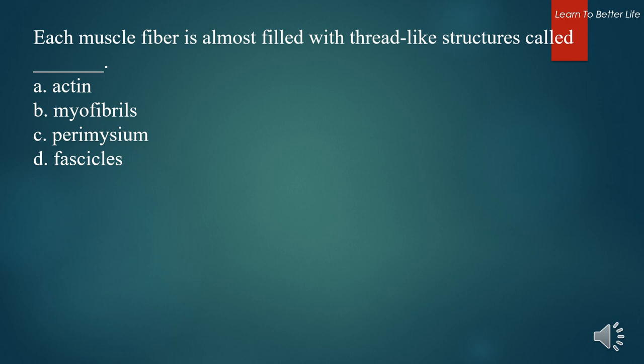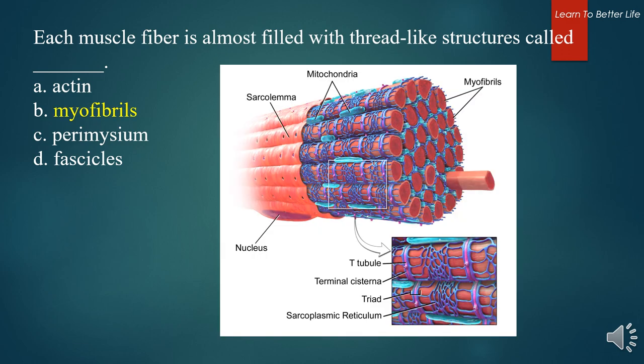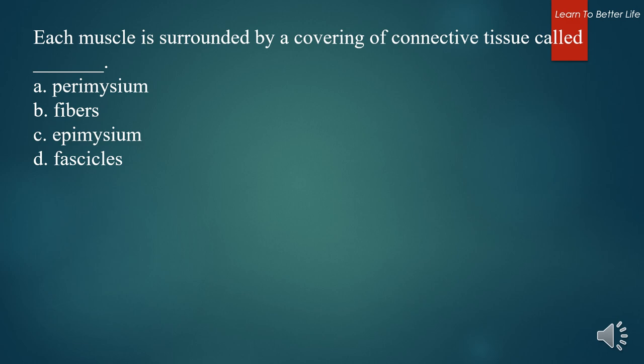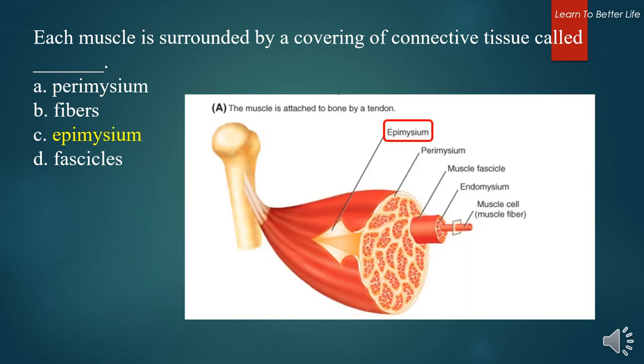Each muscle fiber is almost filled with thread-like structures called what? A. Actin. B. Myofibrils. C. Perimysium. D. Fascicles. The answer is B. Myofibrils. Each muscle is surrounded by a covering of connective tissue called what? A. Perimysium. B. Fibers. C. Epimysium. D. Fascicles. The answer is C. Epimysium.